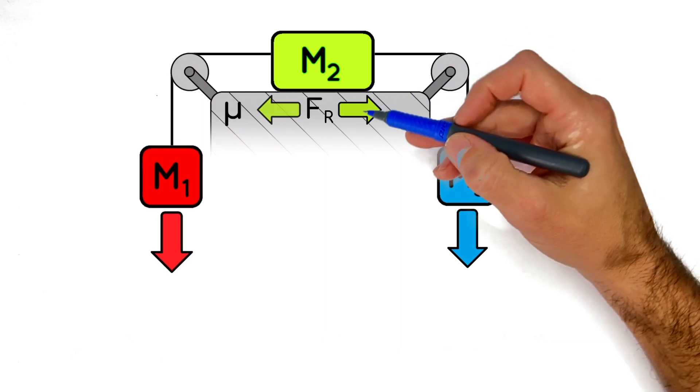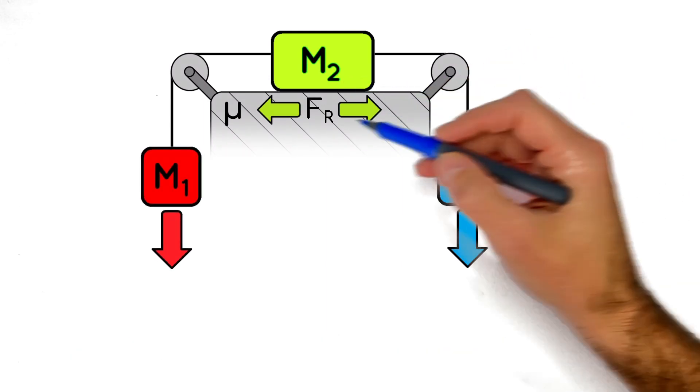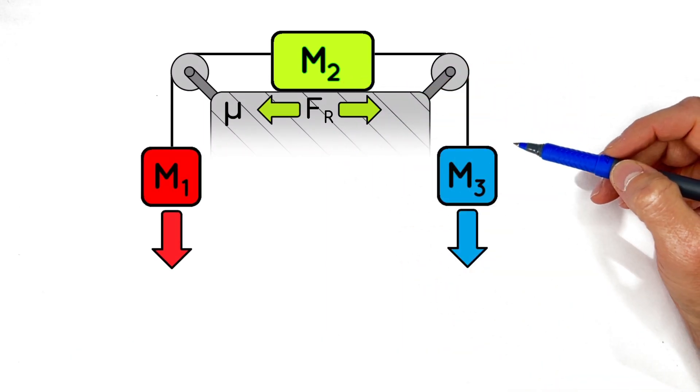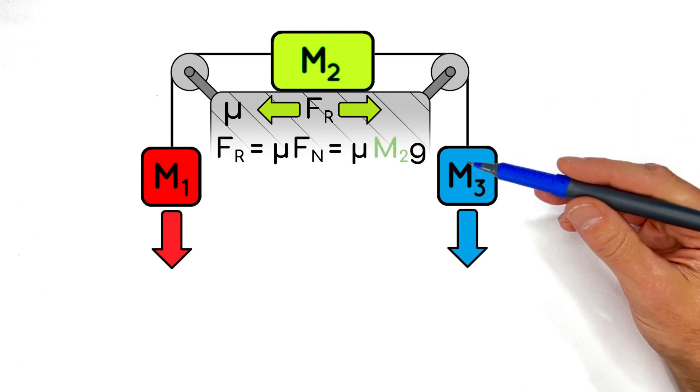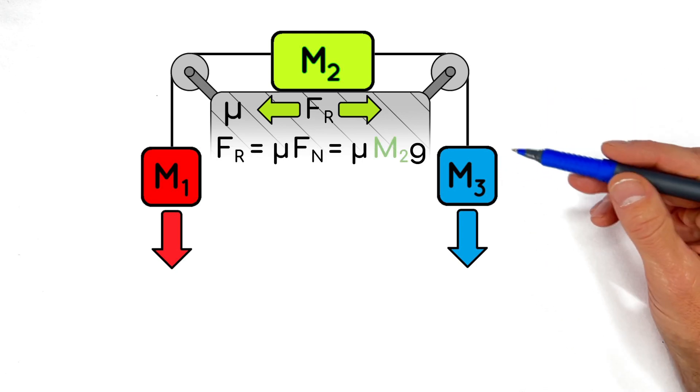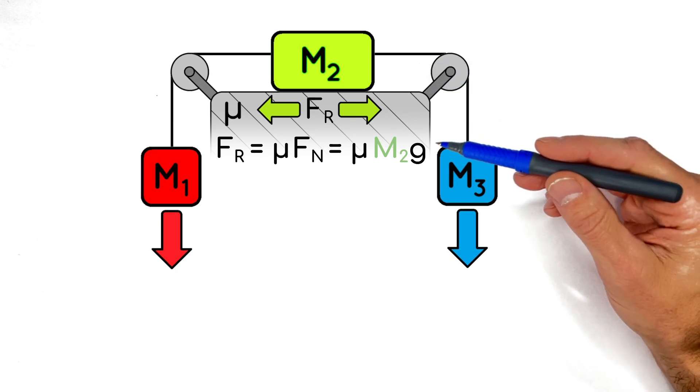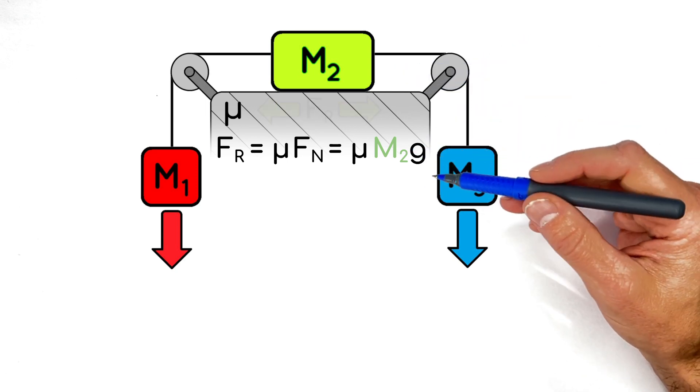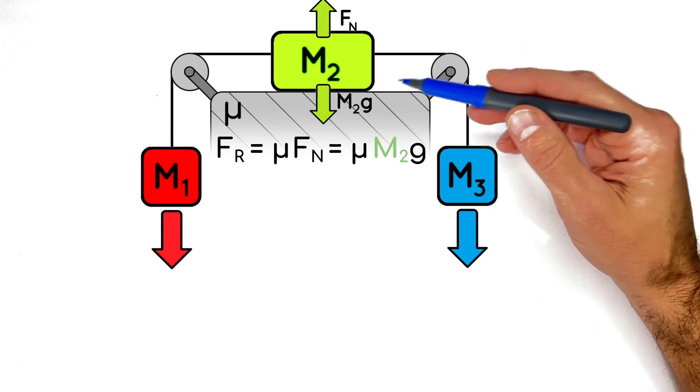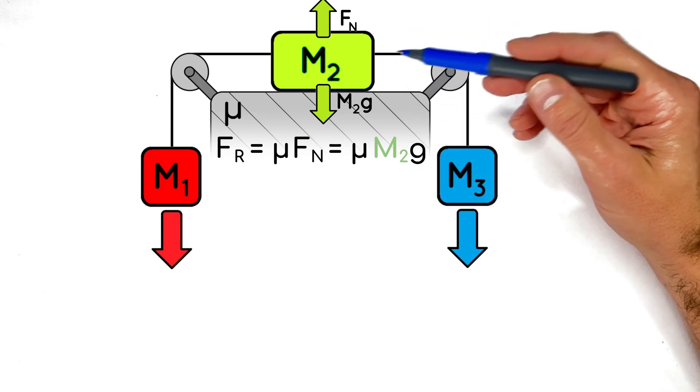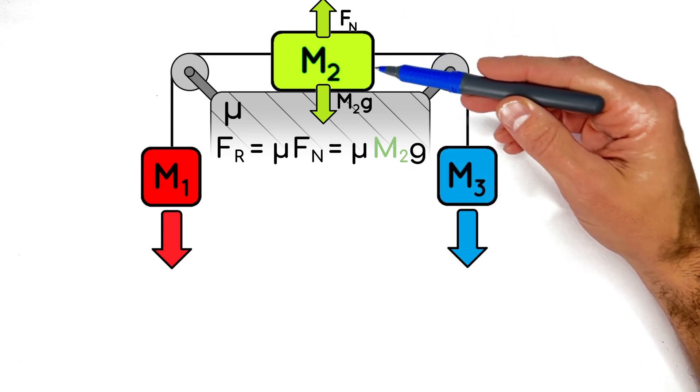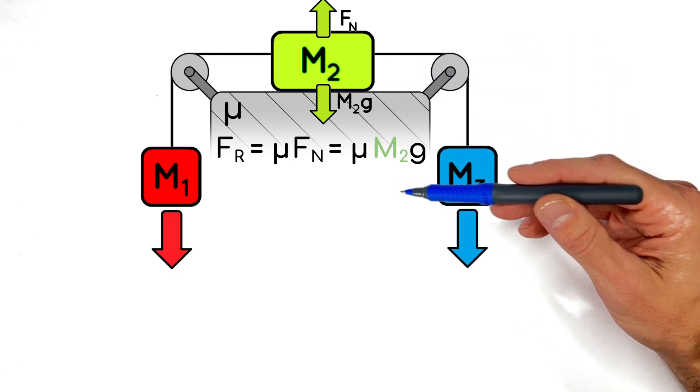Now in this problem, since this green block right here, M2, is sitting on a level surface, friction only has a finite value. That is to say, the friction force is given by mu Fn, where mu is the coefficient of friction between this block and this surface. And Fn, the normal force, in this case, is going to be equal to the weight of the block. That's because this block isn't accelerating vertically, so the normal force upward between the block and the table needs to be equal to the weight of the block downward.